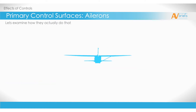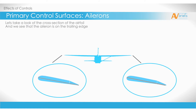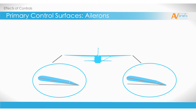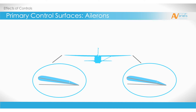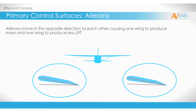Let's take a look at the cross section of the airfoil, and see that the aileron is on the trailing edge. With a neutral input at the yoke, there is an even angle of attack on both ailerons. In order to turn the airplane, we need to introduce a movement at the yoke to create a movement in the ailerons. Ailerons move in the opposite direction to each other, as you can see in this diagram.